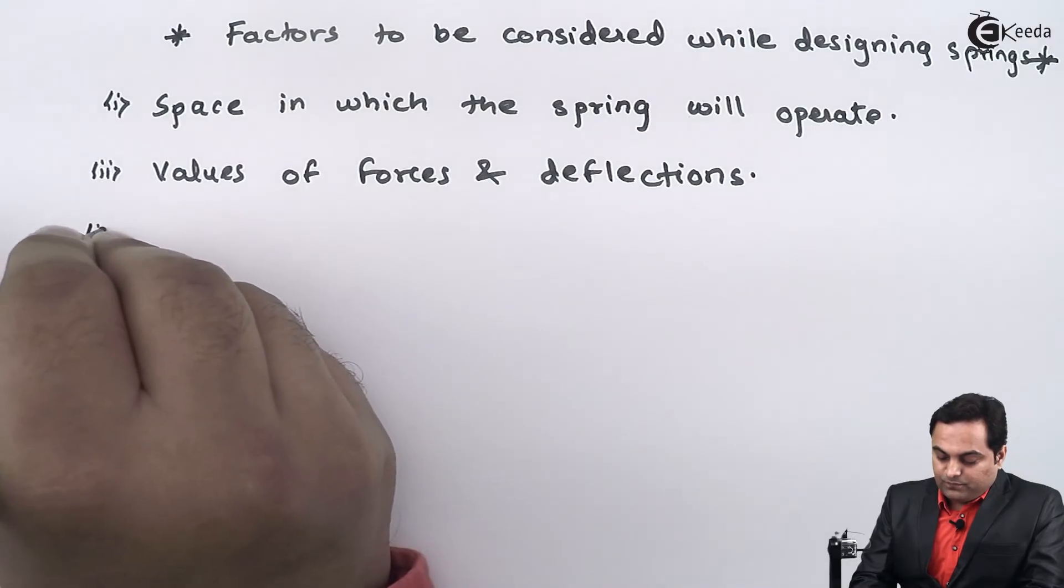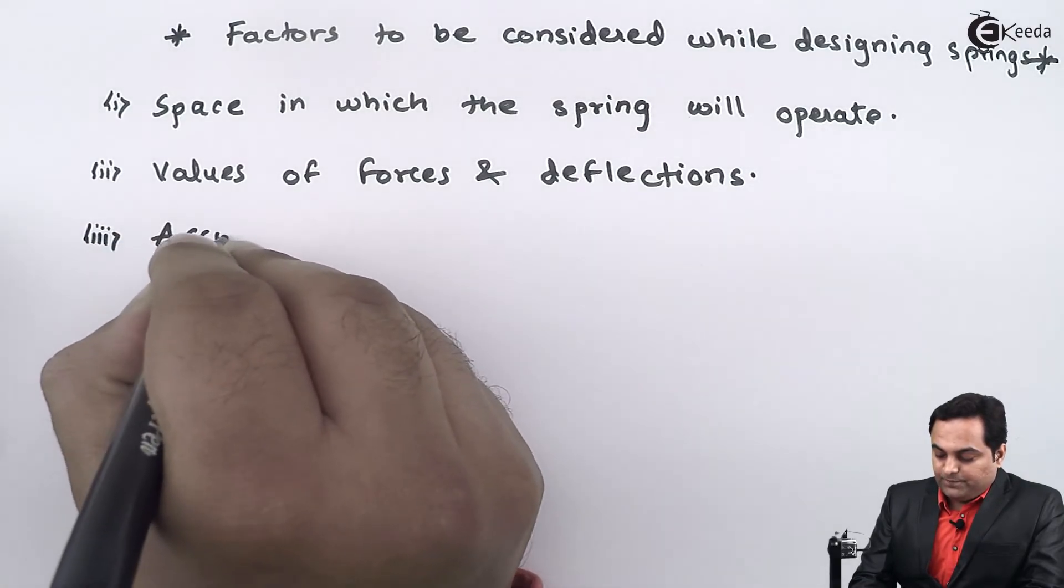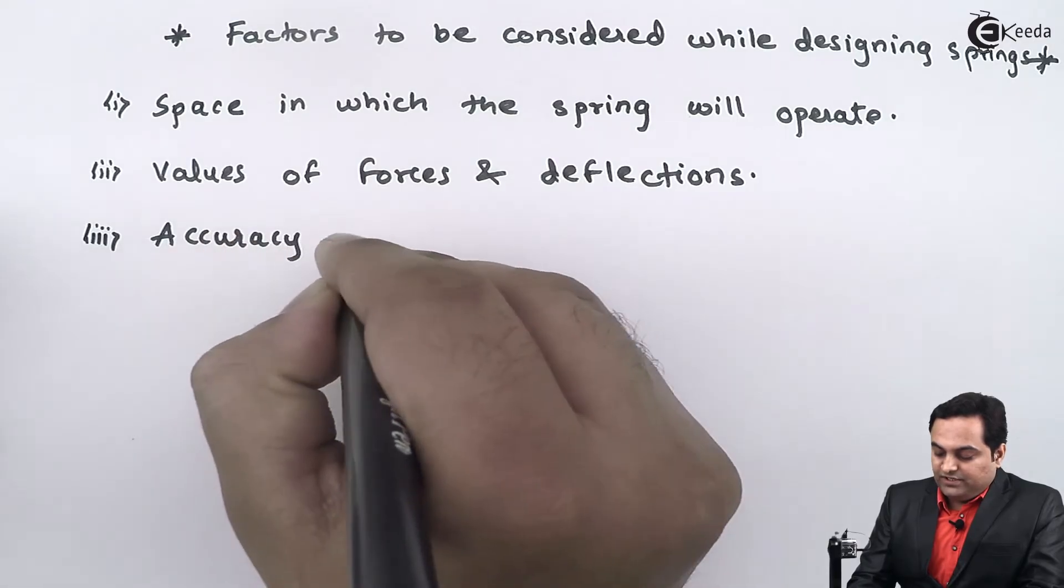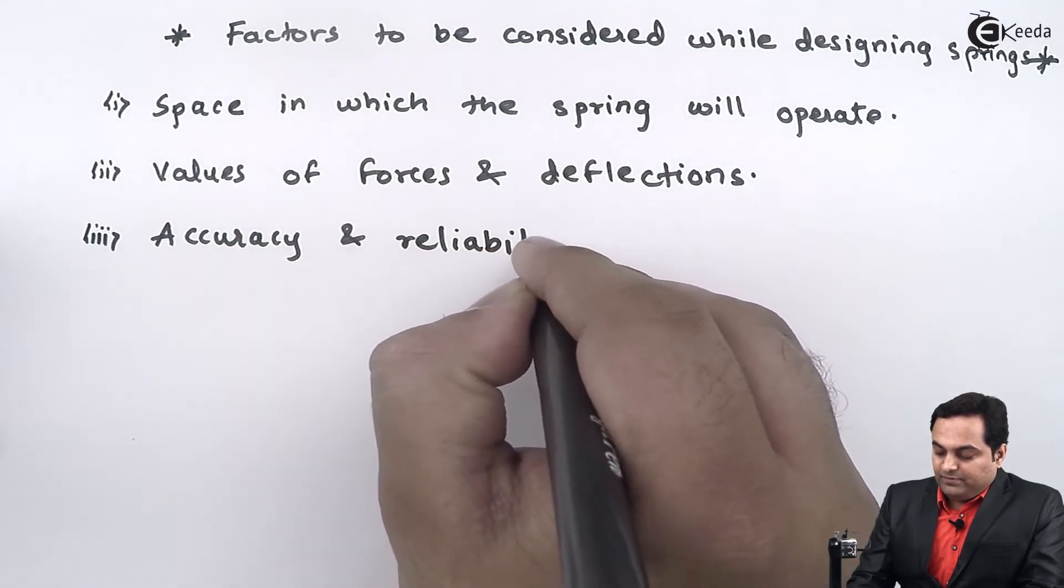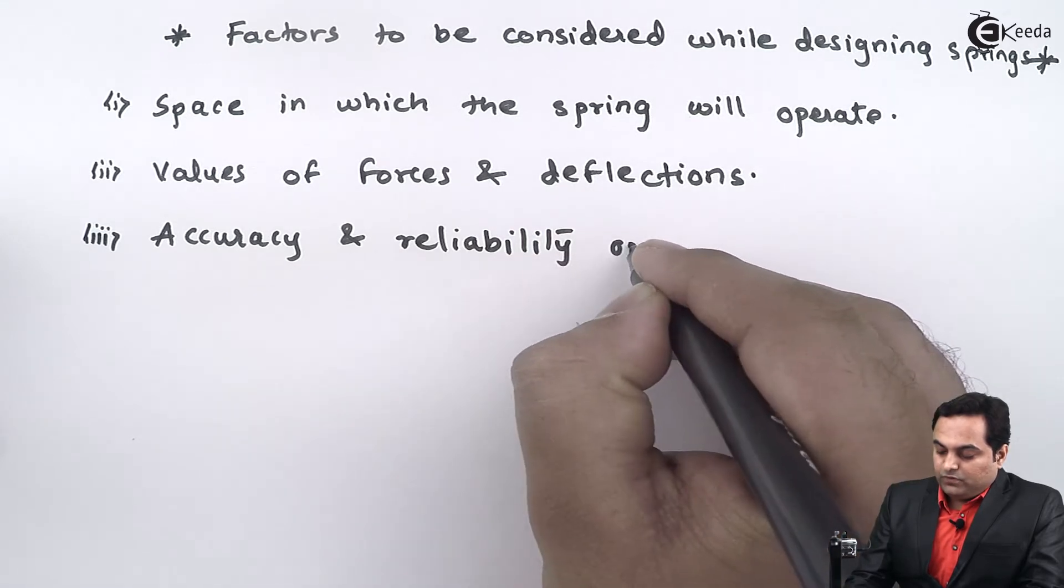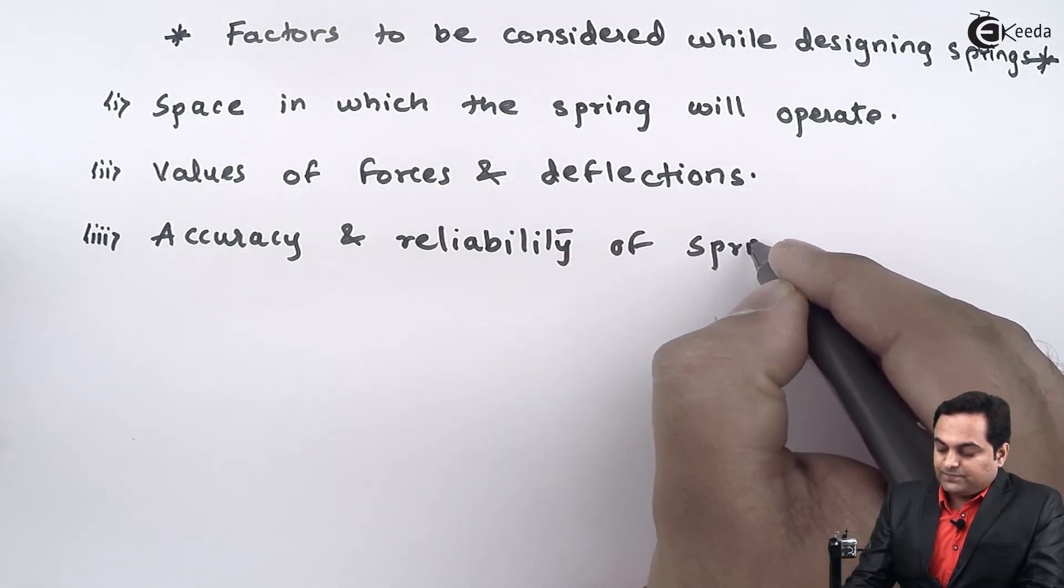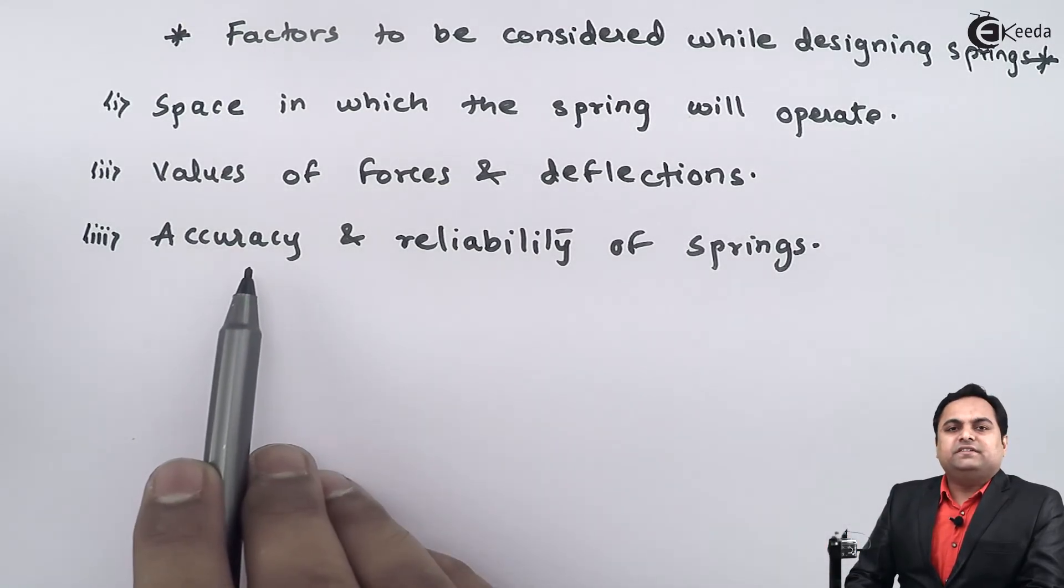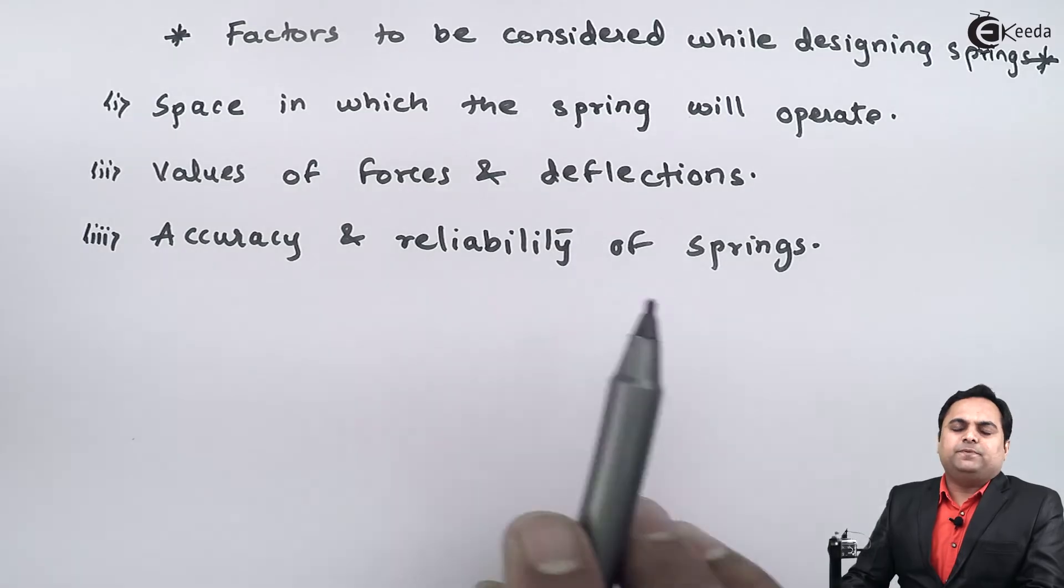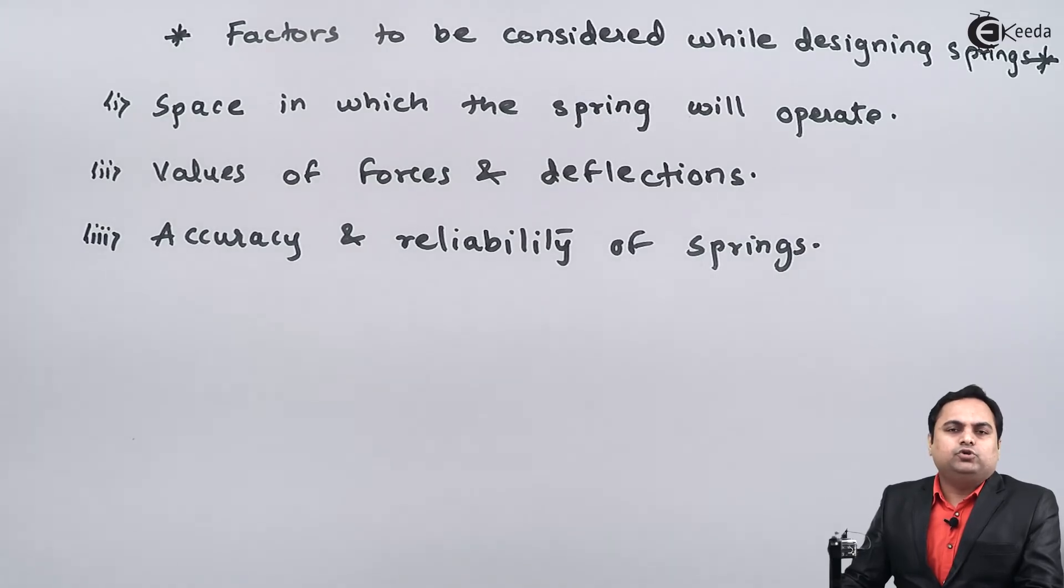Next, the third point is about accuracy and reliability of springs. Here, accuracy indicates that if we have designed a spring for a particular amount of load then it should deflect only by that much amount. There should not be any more deflection of the spring.